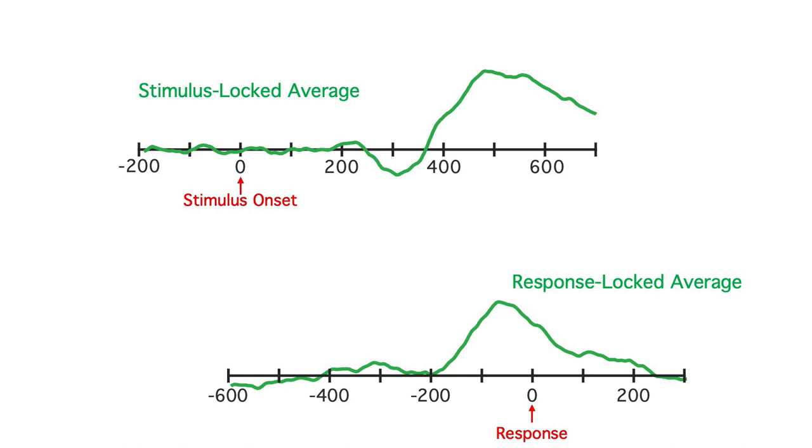In this example, the mean response time was 576 milliseconds. That's 576 milliseconds after the time-locking point in the stimulus-locked average. In the response-locked average, this means that the stimulus was 576 milliseconds before the time-locking point.